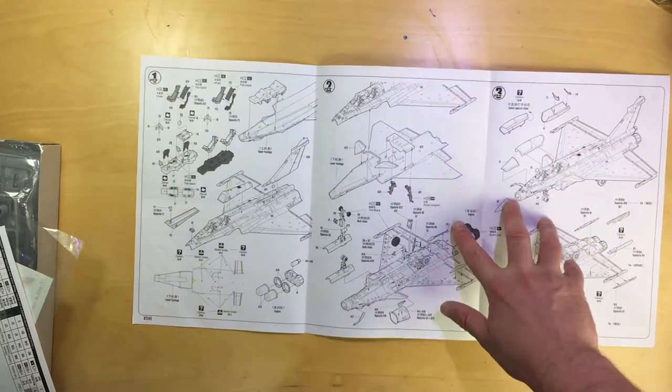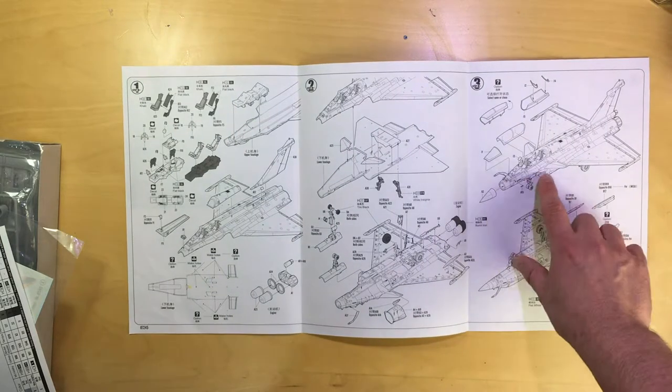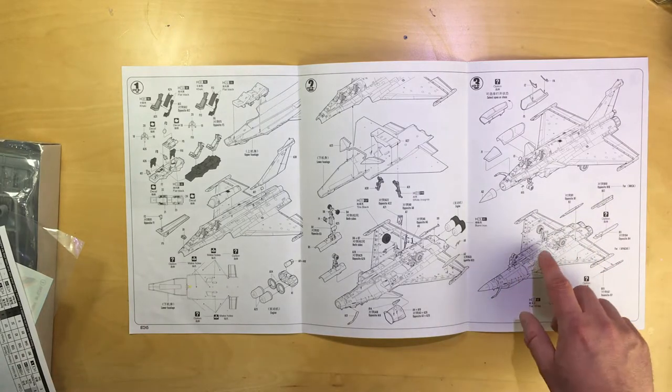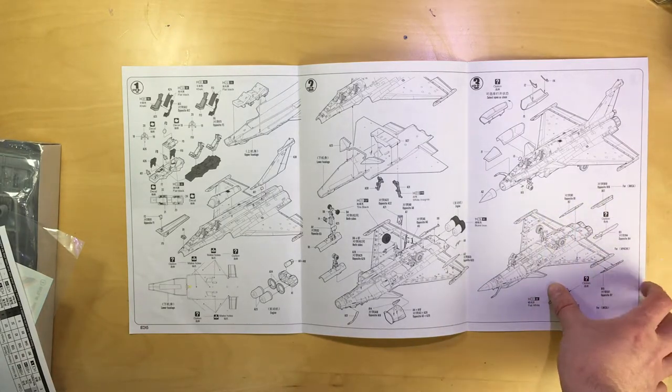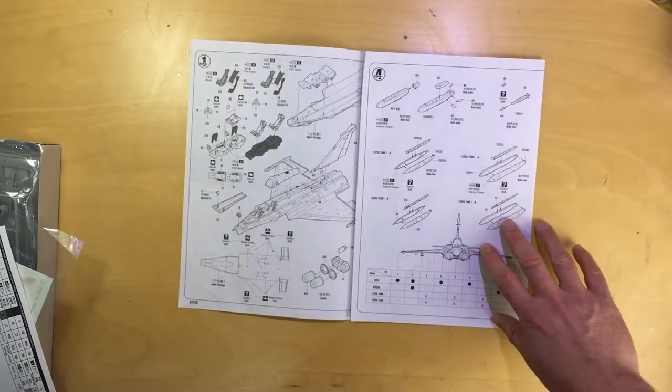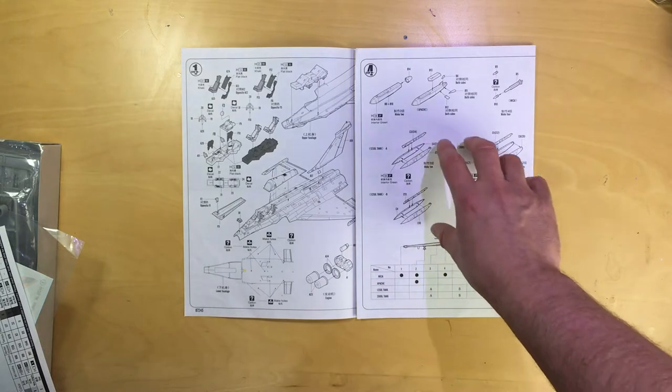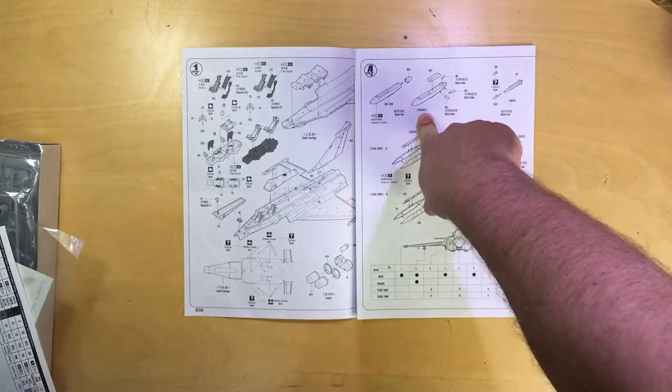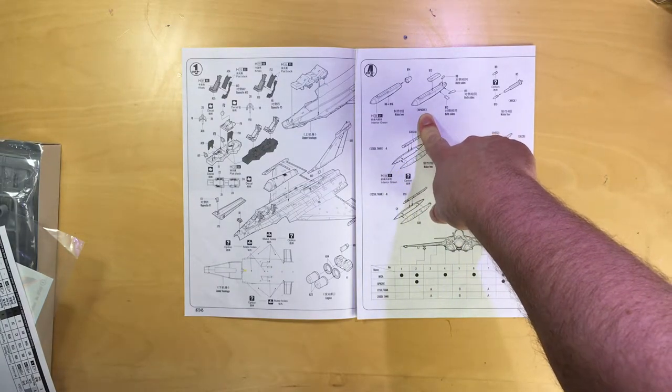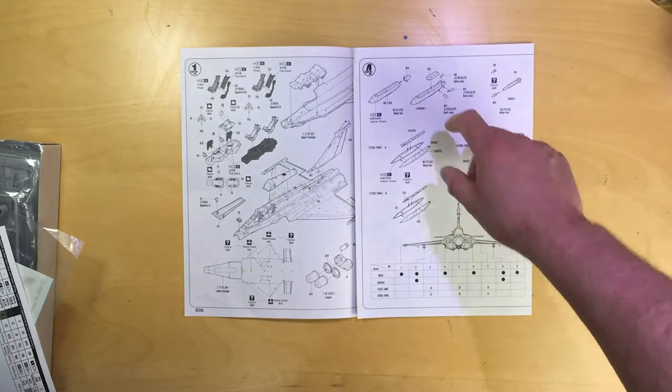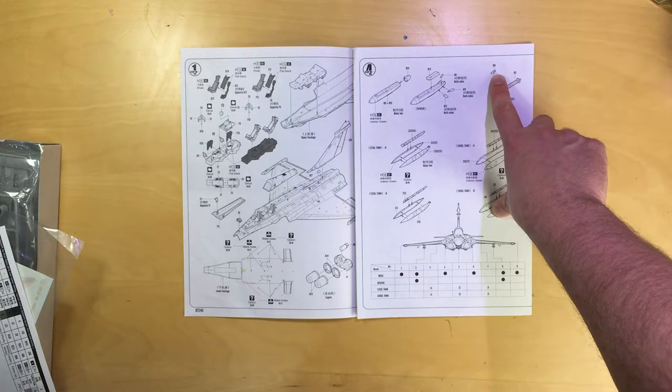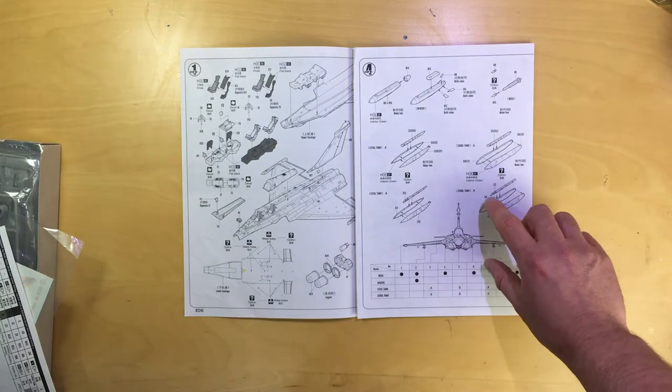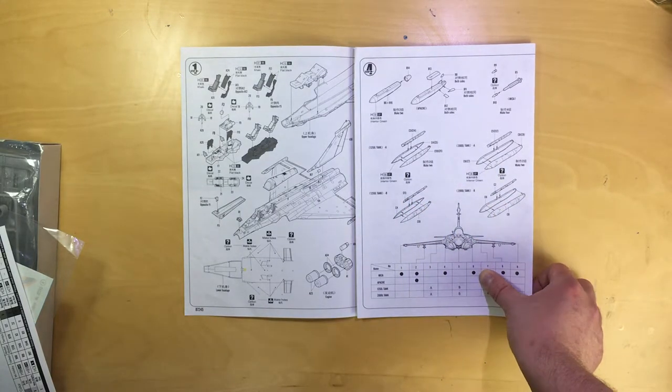The third step is popping the canopy on, which by the looks of it we can have open or closed, then putting on pylons for the weapons. The last step is bringing the ordnance together. In the box we've got some Apache cruise missiles which is a variant of Storm Shadow with a cluster bomb unit for attacking runways. We've got MICA missiles with either the electromagnetic or infrared options. We've got fuel tanks - two types, the 2000 liter and the 1250 liter.